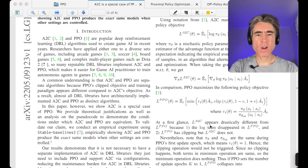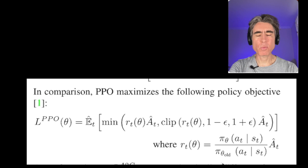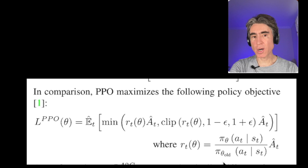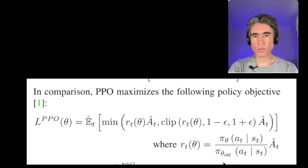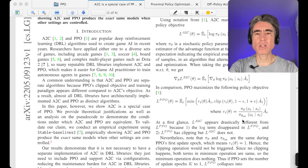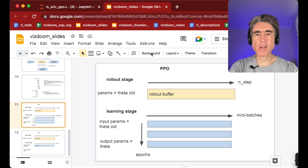Now they point out that RT is one when pi theta equals pi theta old, and they explain when pi theta will equal pi theta old. Why would pi theta equal pi theta old? What is this pi theta old anyway? When I first looked at it, I was assuming it was the pi theta old before we did the backprop or something, which is sort of true but misses some steps. So let's have a look at PPO.